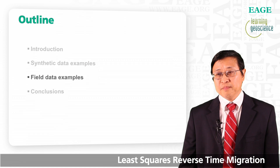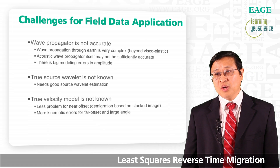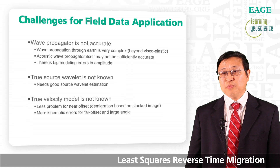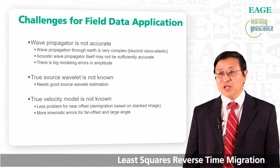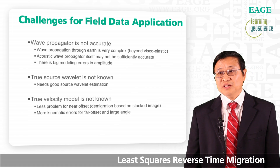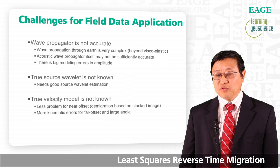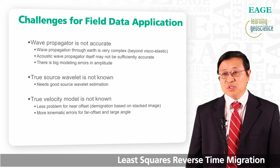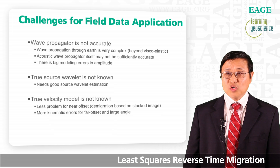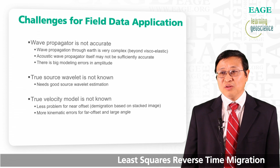Next, I will talk about field data examples. First, let's discuss some of the challenges for field data application. The wave propagator is not accurate — wave propagation through the real earth is very complex, even beyond viscoelastic. Our wave simulation is based on an acoustic wave propagator, therefore it is not able to account for converted waves, does not account for attenuation, and the amplitude is not accurate. Second, to get a good broadband image we need an accurate source wavelet. Third, we need an accurate velocity model — for far offset, if the velocity model is in error, the modeled wavelet will not align with the observed wavelet.